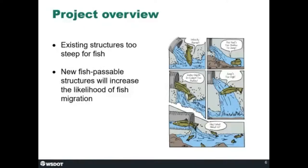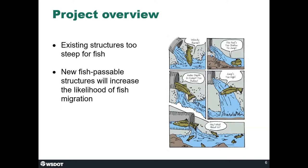That video is available on our YouTube channel. We have corrected 365 barriers since 1991, improving access to more than 1,200 miles of upstream habitat. The culverts on 202 and 203 have structures that are too small, too steep, and too shallow for successful fish migration — the water may be too fast, too shallow, or too high for fish to jump. Replacing them with larger structures increases the likelihood that fish will migrate and spawn successfully.